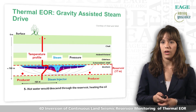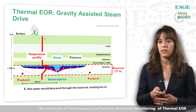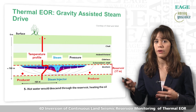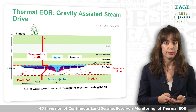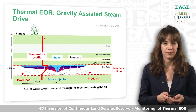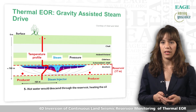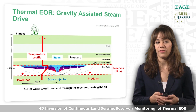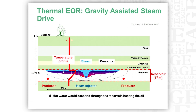The temperature profile is expected to be very high through the steam layer and then decreasing downward through the reservoir. The question is: what are the effects of thermal EOR — temperature, steam, and pressure — on P-wave velocity and density?